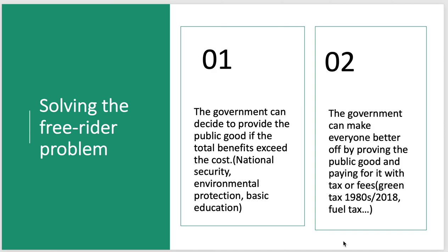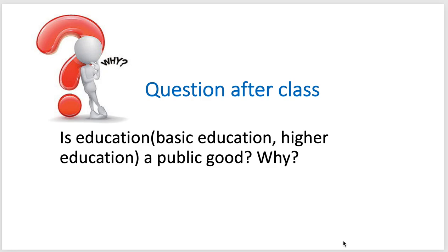Solving the free rider problem: governments can decide to provide the public good if total benefits exceed the cost — national security, environmental protection, basic education. The government can make everyone better off by improving public goods and paying for it with taxes or fees, such as the green tax of the 80s and some of the fuel taxes we've seen in 2018. That's a view on public goods — just a very short presentation. Thank you very much.